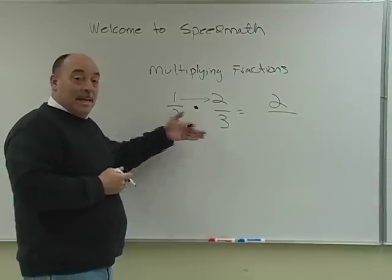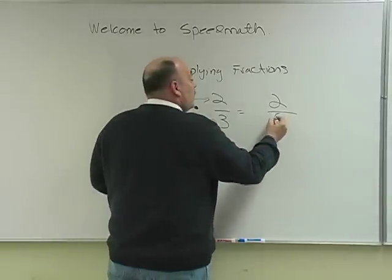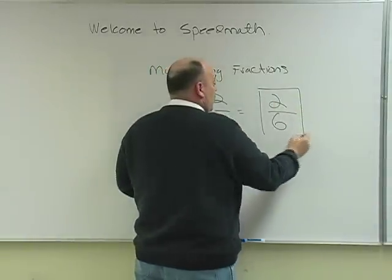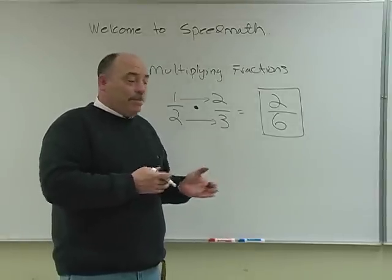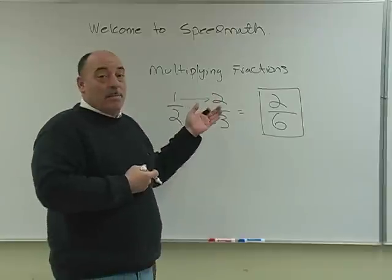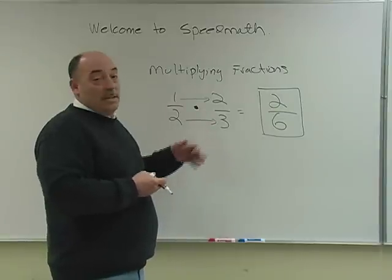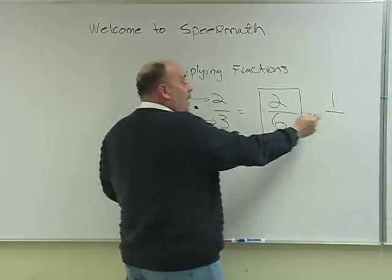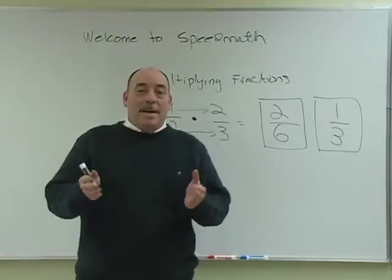We do the exact same repeated step for the denominators. Two times three is six, so we replace the denominator value with six and our fraction is two over six. Now this is a correct answer — I wouldn't necessarily mark this wrong on a test. But sometimes I'll ask students to reduce this fraction. I ask them what number goes into two that also goes into six. Two goes into two one time, and two goes into six three times, giving us one third. So this is also a correct answer.